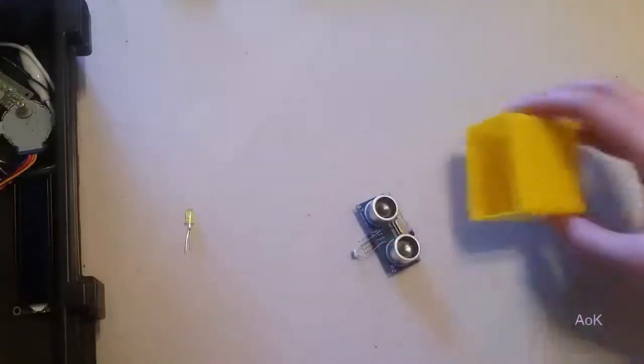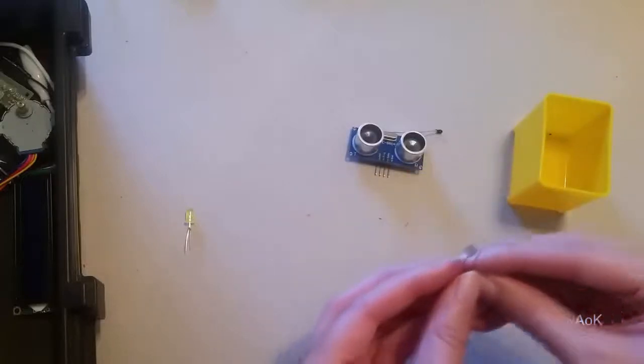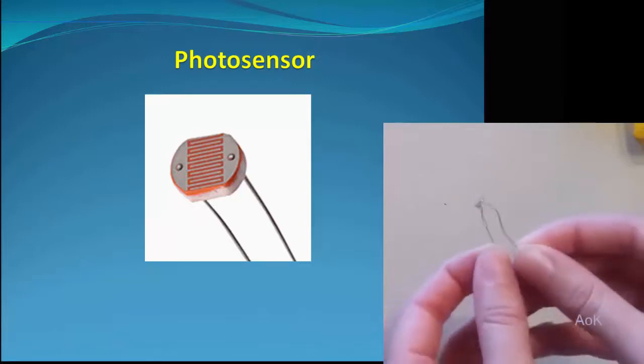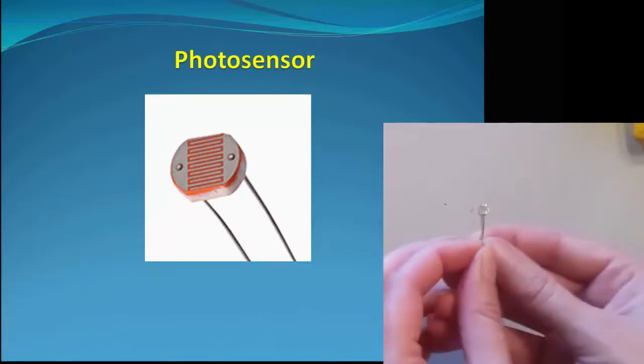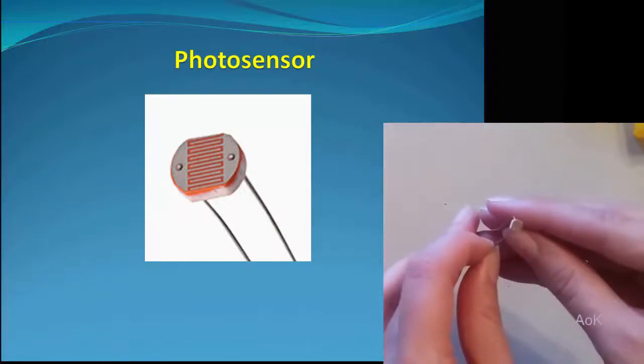Next we have several different sensors. Here's a photosensor. A photosensor is basically just like a resistor, but it's a variable resistor. So depending on how much light touches the surface, the resistance will go up or down.